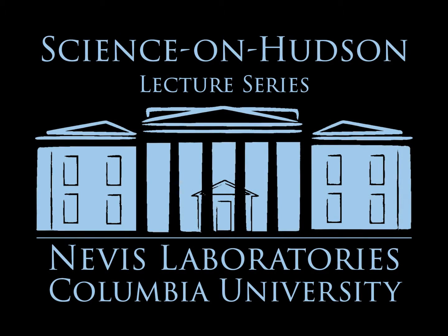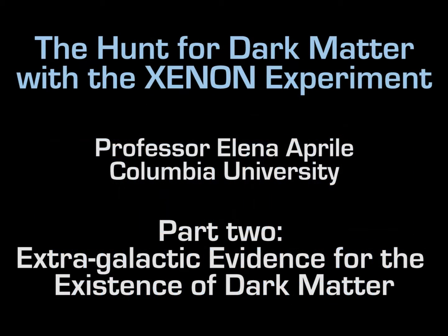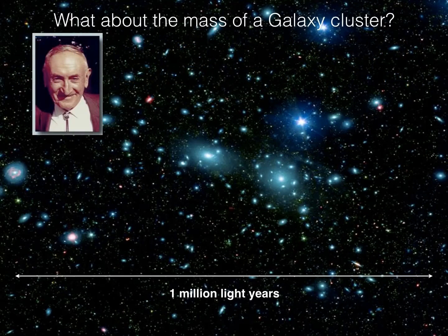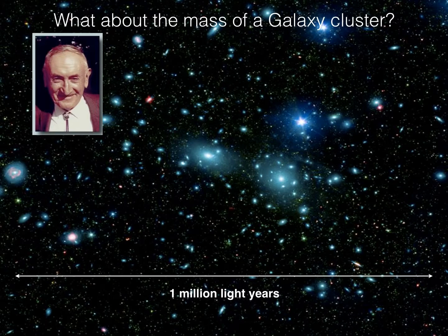It's not just limited to the galactic scale. Early in 1933, this Swiss-American astronomer, Fritz Zwicky, was actually the first to come to the conclusion of the presence of dark matter and coined the name Dunkelmaterie — dark matter — from observations of galaxies in a cluster of galaxies.